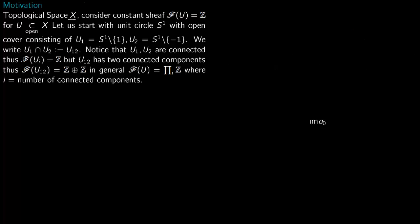Now we talk about the motivation for Čech cohomology. You start with a topological space X and consider a constant sheaf on it. So F of U is equal to the integers here, but you could write any set. So F of U is any set, where U is an open subset of X.